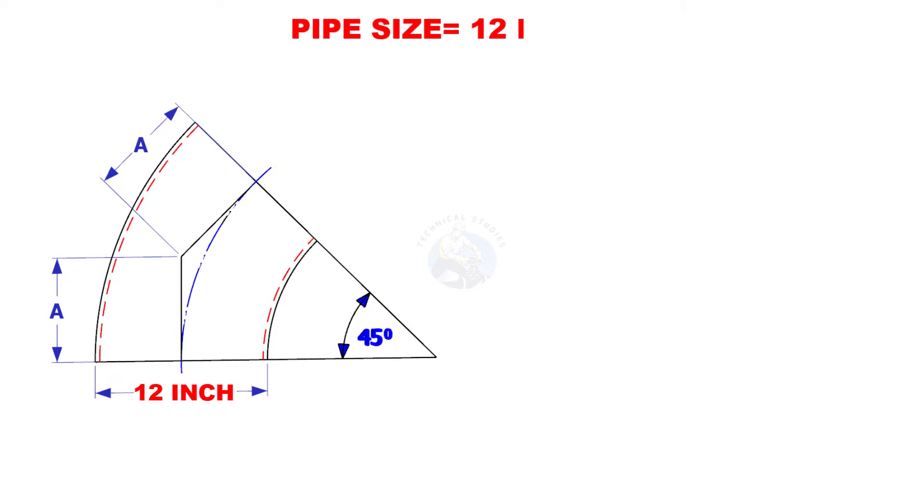Try one more example. The NPS is 12 inches and the degree is 45. Here the constant is 15.9. Multiply 12 by 15.9. Here the center to end distance is 190.8 millimeters.